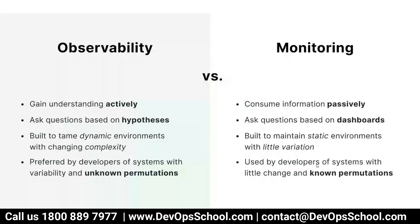If you compare observability versus monitoring: observability gains understanding of the system actively, whereas monitoring consumes information passively. Observability asks questions based on hypothesis; monitoring asks questions based on the dashboard. An important point — observability is built for a dynamic environment with changing complexity, whereas monitoring was mainly built for static environments.